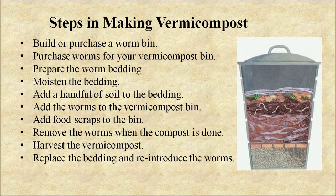The steps in making vermicompost are: build or purchase a vermicompost bin; prepare the worm bedding; moisten the bedding; add a handful of soil to the bedding; add the worms to the vermicompost bin; add food scraps to the bin; remove the worms when the compost is done; harvest the vermicompost; then replace the bedding and reintroduce the worms.